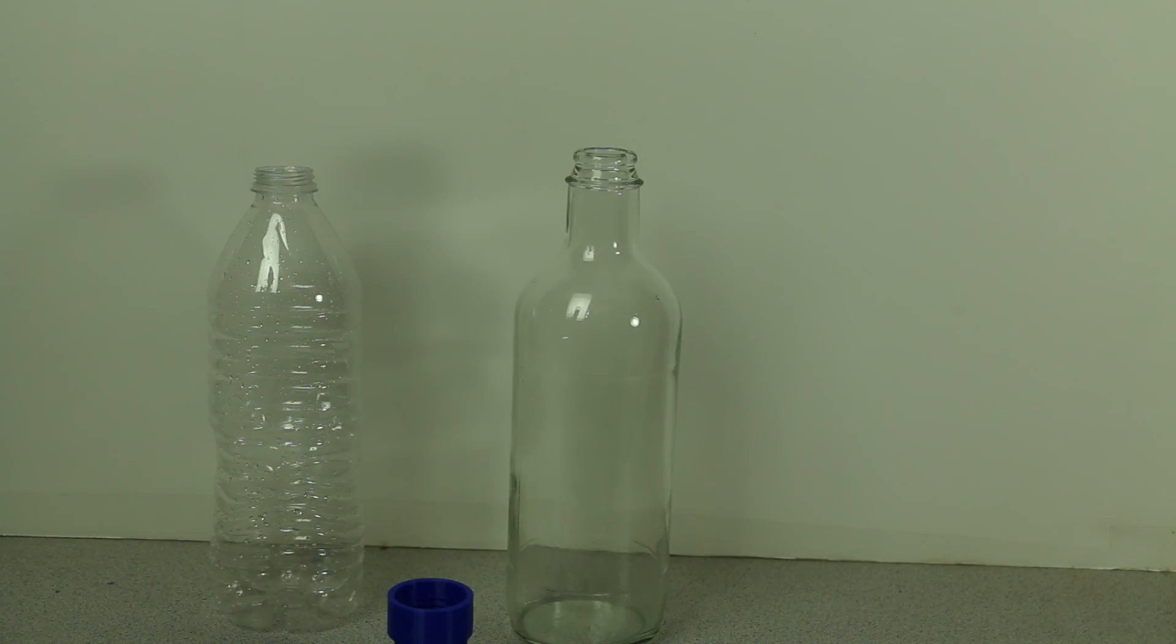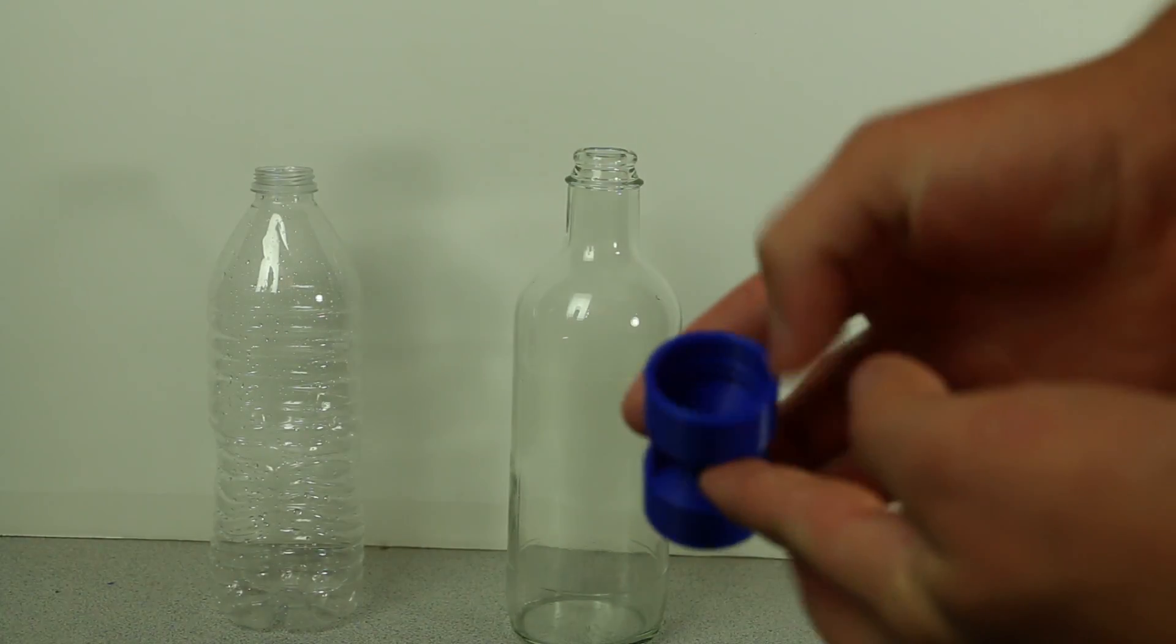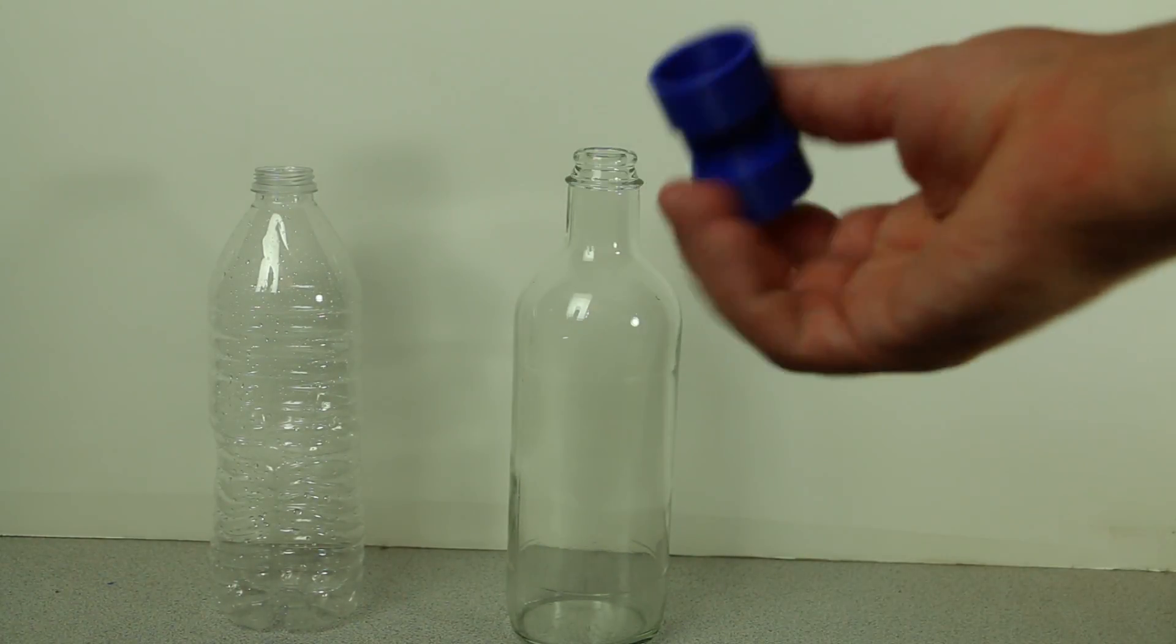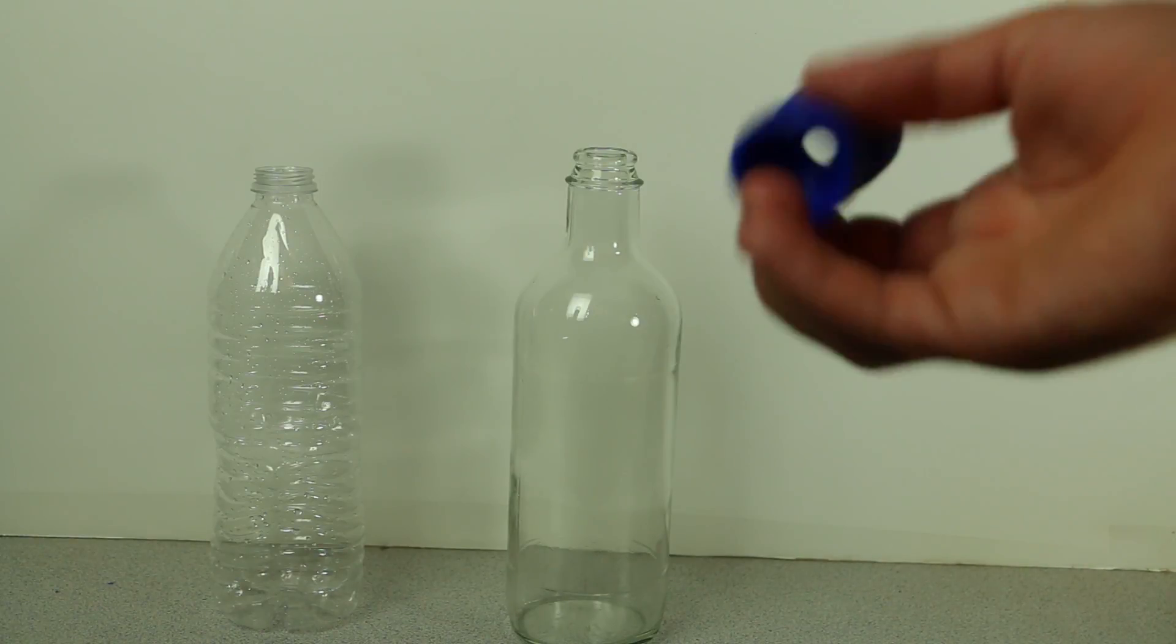Alright, so the print has finished and boy does it look nice! You can see it here. You can see the internal structure of it. What it is, is it's designed to create a tornado inside of a bottle. How does it work?